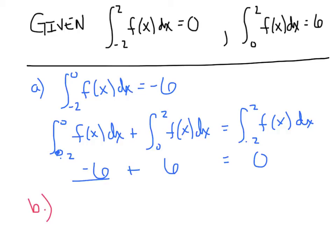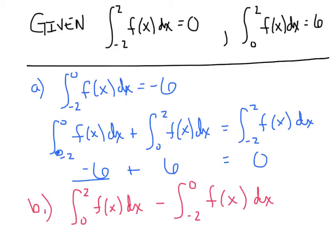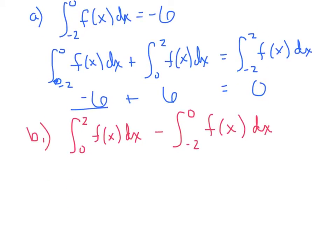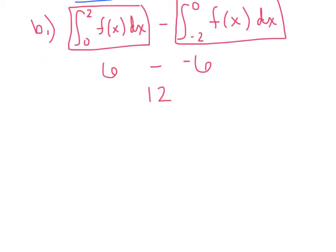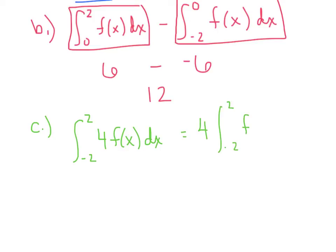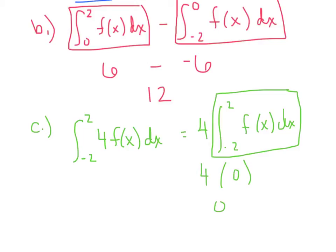Part B: what if they wanted the integral from 0 to 2 minus the integral from negative 2 to 0? Just take advantage of everything we already know. The integral from 0 to 2 equals 6, minus the integral from negative 2 to 0 which equals negative 6, so I've got a final answer of 12. Part C: the integral from negative 2 to 2 of 4 times f(x). I'm going to slide that 4 out and rewrite the integral as 4 times the integral from negative 2 to 2. That integral has a value of 0, so 4 times 0 gives us 0 for our total answer.